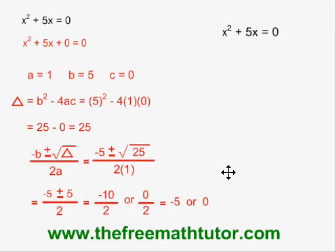If I solve the same equation by factoring, I will be using the common factor method. Factoring, I get x times x plus 5 equals 0.